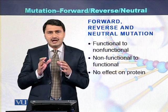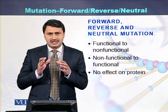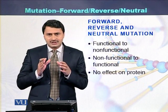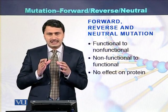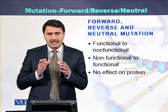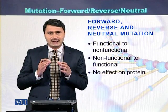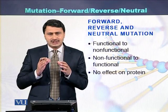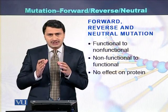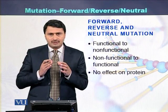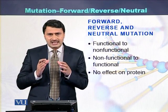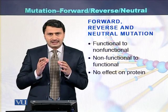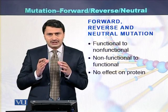To conclude: forward mutation is such a mutation that converts the wild type phenotype into the mutated phenotype, or we can say the functional phenotype into non-functional phenotype, while reverse mutation converts the mutated phenotype into the normal phenotype. In case of neutral mutation, there is a change at the level of protein, but the function of the protein or the phenotype remains the same.